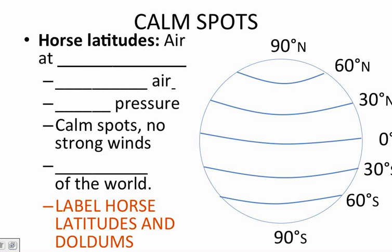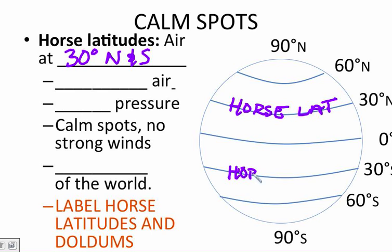My second calm spot to label are the horse latitudes. Horse latitudes are at 30 degrees both north and south of the equator. Label those up. Horse latitudes. Horse latitudes is a little different. So at our equator, we had warm rising air, at the 30 is where we have our cool sinking air. Sinking air means that I have a higher pressure, and again, this is a calm spot. I don't have a lot of horizontal wind. I have simply sinking air, air that is moving downward within the convection current. Because this is an area of high pressure, I think of it as a dry climate or the deserts of the world.